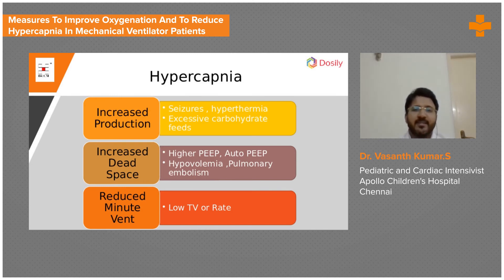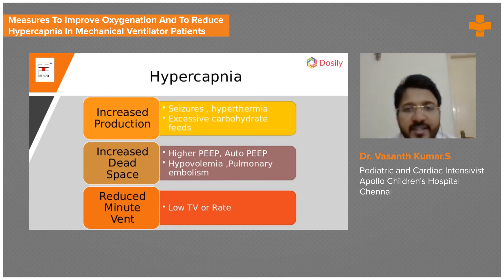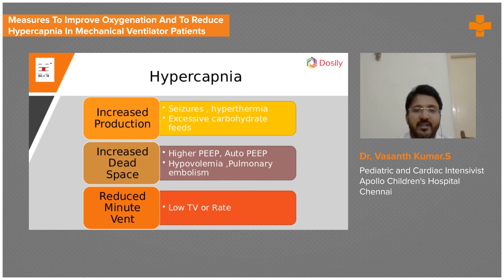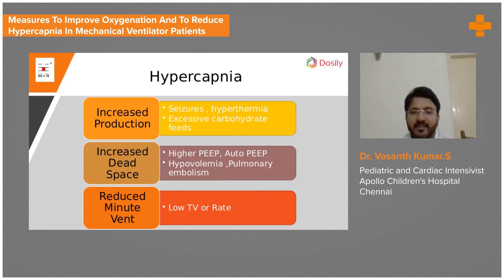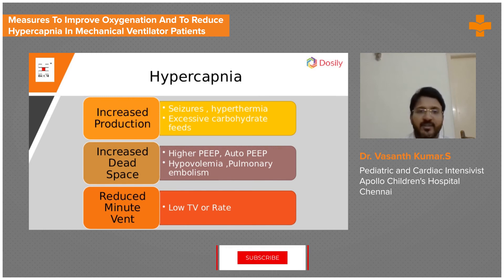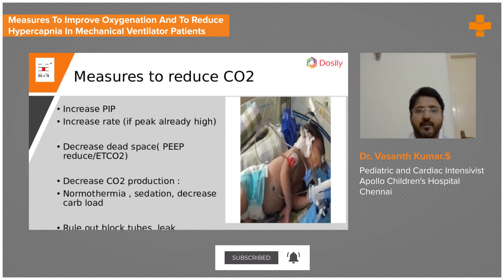Causes of hypercapnia: CO2 can be produced excessively — fever increases CO2 production, seizures increase muscle activity and temperature, and feeding causes thermogenesis which also raises CO2. These are causes of increased CO2 production. Alternatively, minute ventilation may be low — low tidal volume or low respiratory rate. Dead space can also be high: if PEEP is excessively high, alveoli become overdistended, increasing dead space and causing hypercapnia.